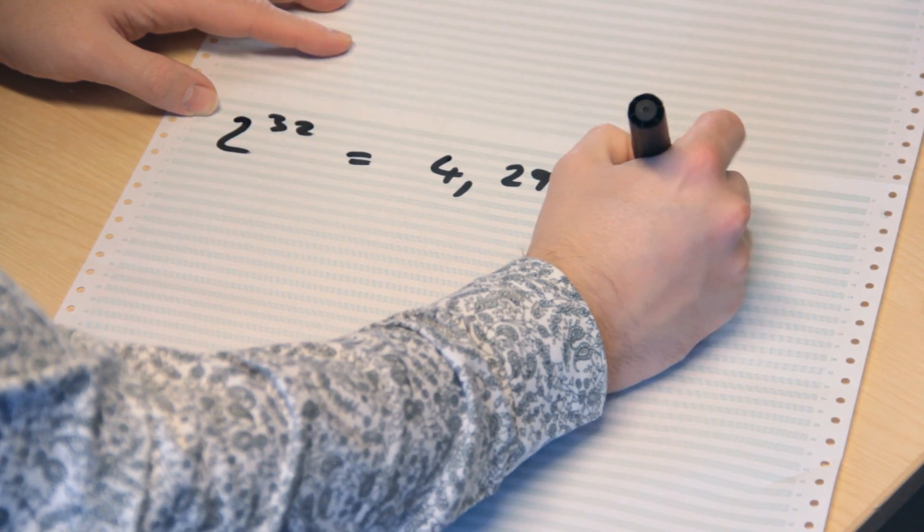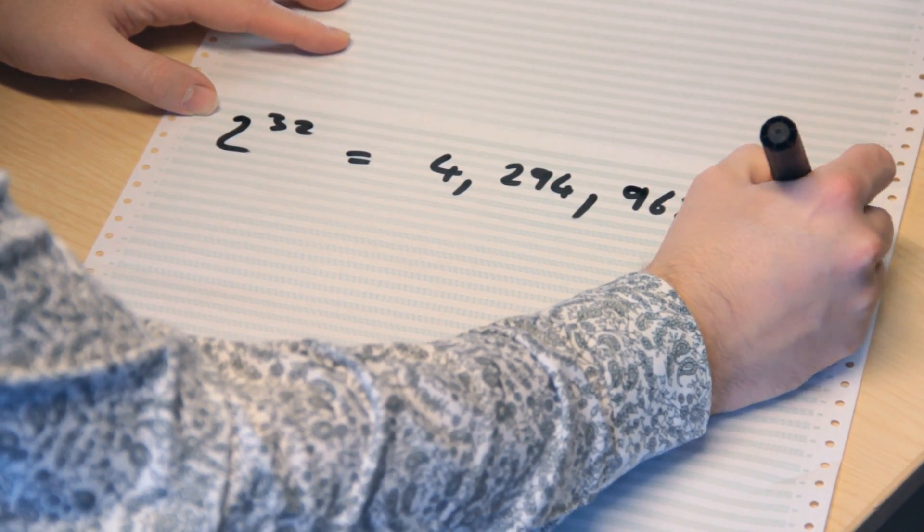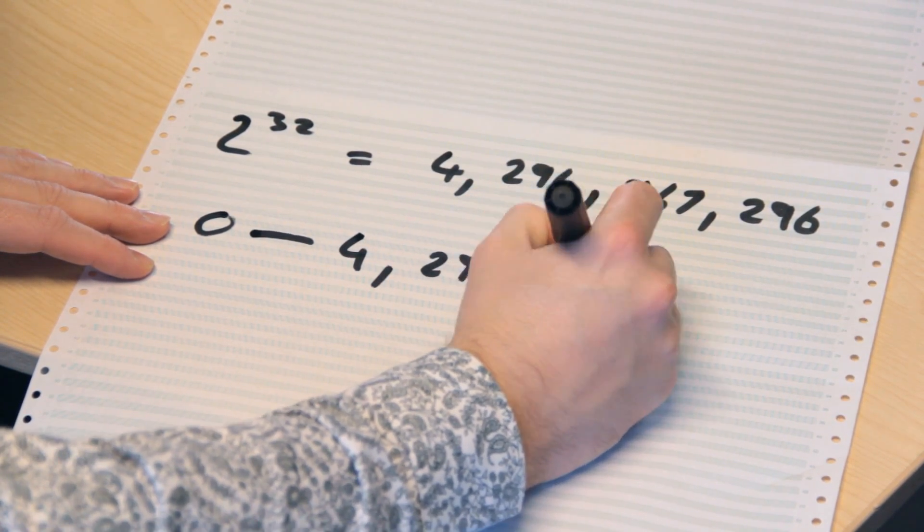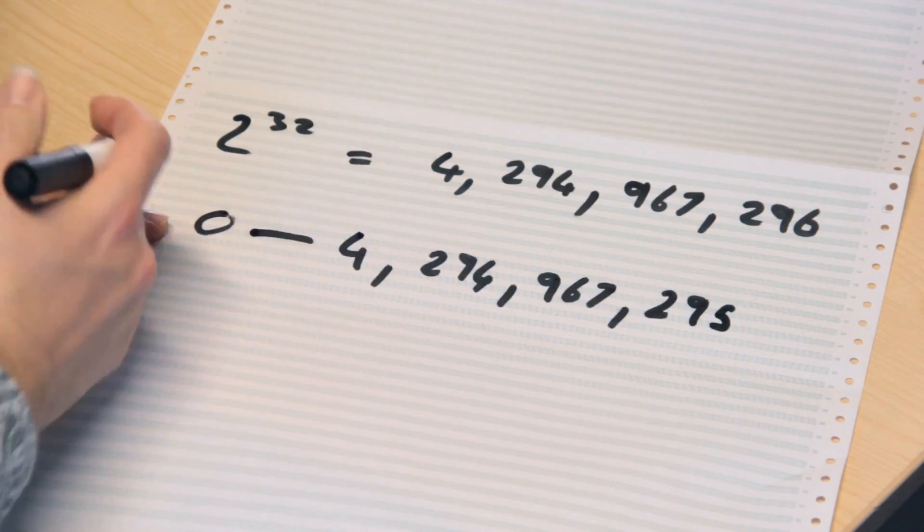YouTube, because their computers were probably running 32-bit operating systems when they started implementing this, uses a standard 32-bit integer to store the view count. It's the default on many systems, and you'd think two billion or so views was unlikely to be amassed — that's a third of the planet perhaps watching one video. A 32-bit system, two to the power of 32, gives us 4,294,967,296 possible numbers, that's zero through to 4,294,967,295. So why did YouTube break when it got past two billion, when that's only half the amount you can fit in a 32-bit integer?